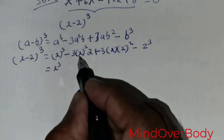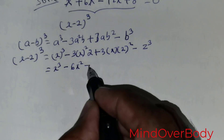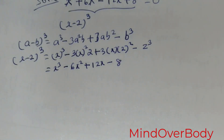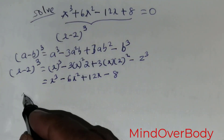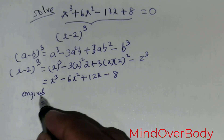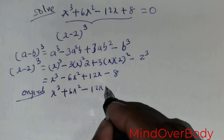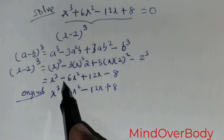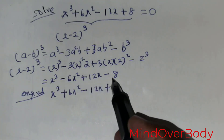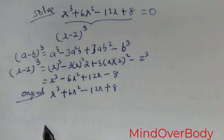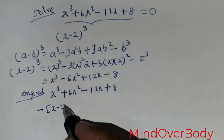Comparing with the original equation x cubed plus 6x squared minus 12x plus 8, we see the signs differ. The original has positive 6x squared, but expanding x minus 2 cubed gives negative 6x squared. The signs are all opposite, meaning we need to use the negative of x minus 2 cubed.